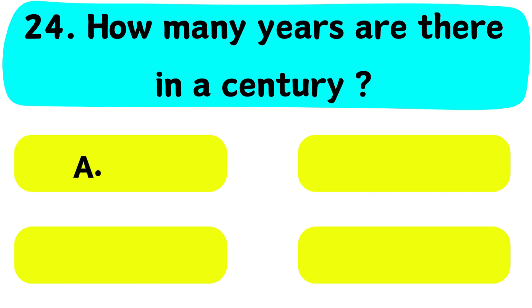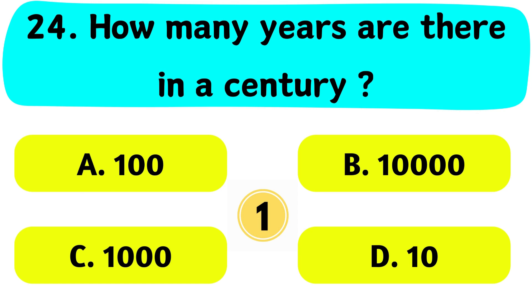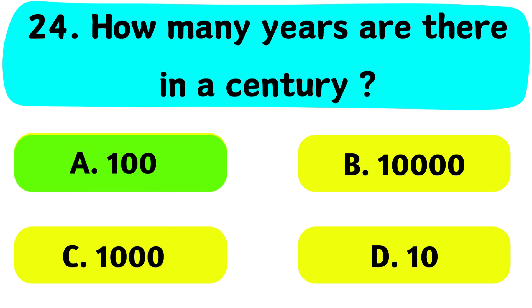Question No. 24. How many years are there in a century? A. 100, B. 10,000, C. 1000, D. 10. The correct answer is Option A. 100.